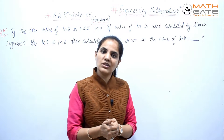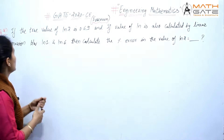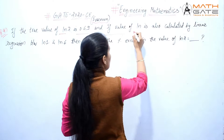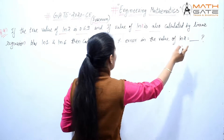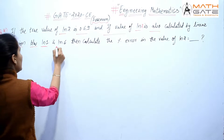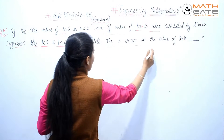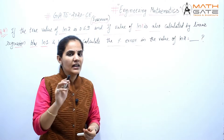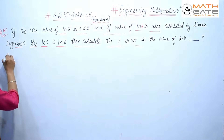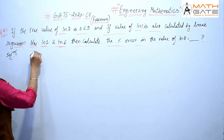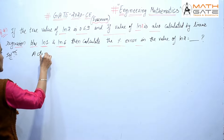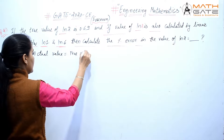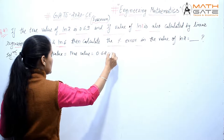Let's see one more good question from Civil 2020 forenoon session. The question is: if the value of ln2 is 0.69, and if the value of ln2 is also calculated by linear regression between ln1 and ln6, then calculate the percentage error in the value of ln2. The true value or actual value given is 0.69.